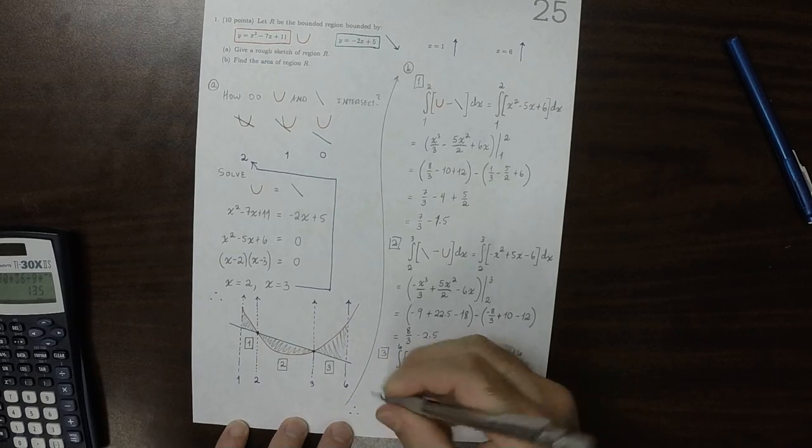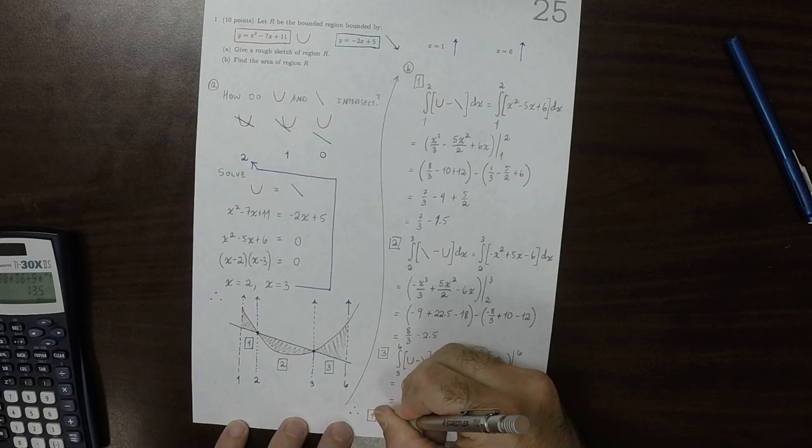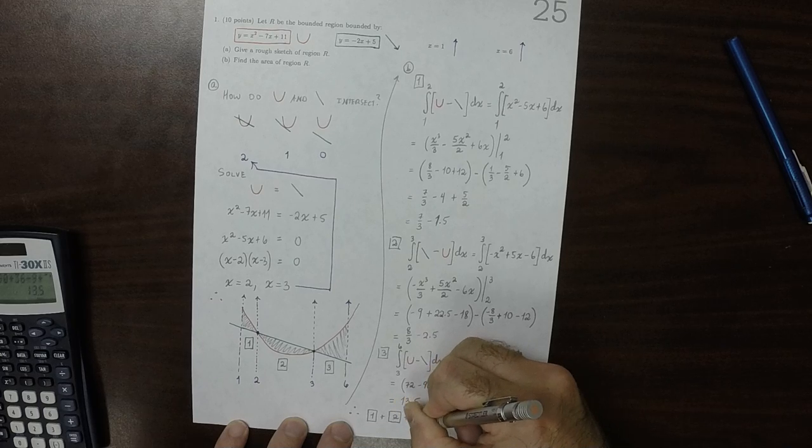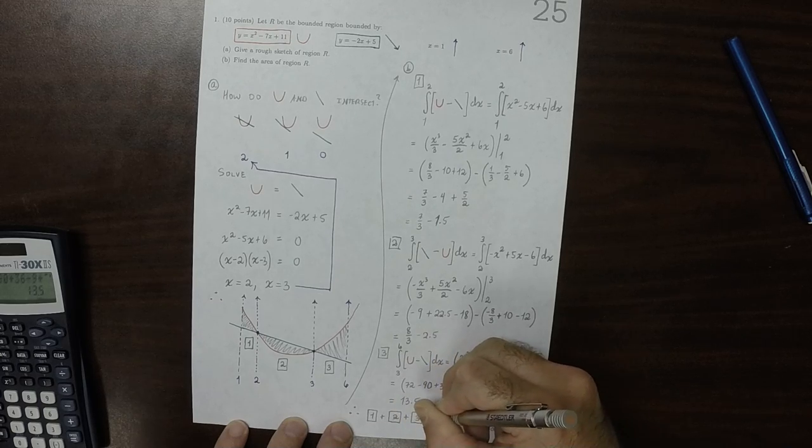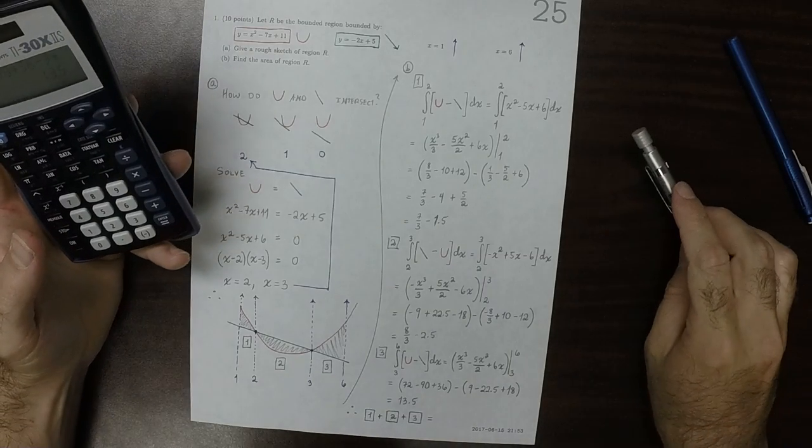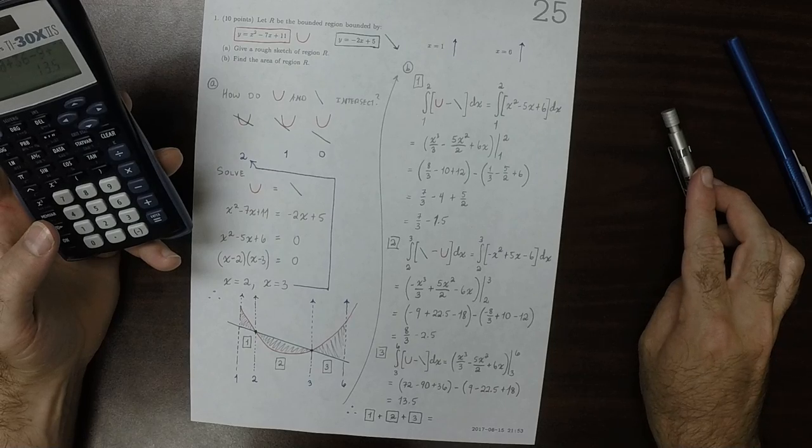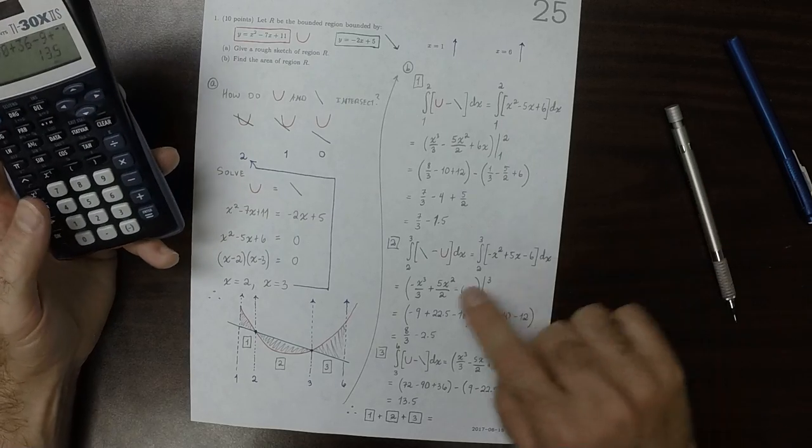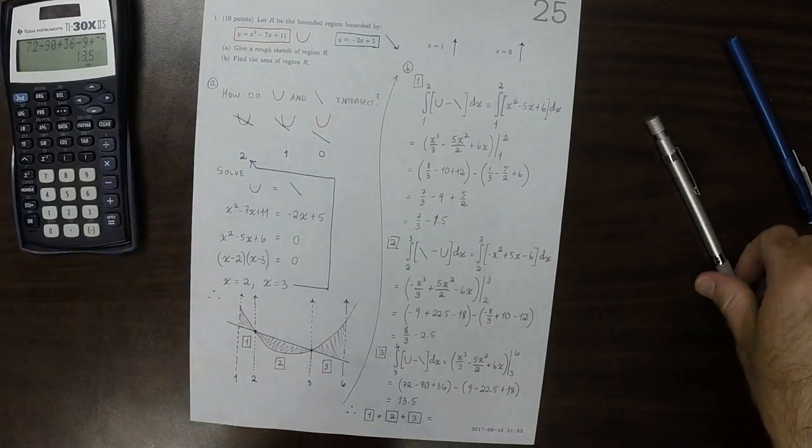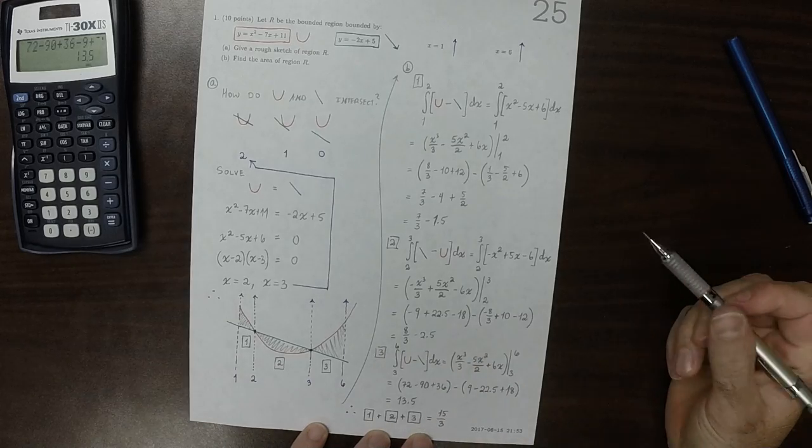therefore, 1 plus 2 plus 3, those three regions. Okay. So then if we add together the thirds, 7 thirds plus 8 thirds, that's 15 thirds, which is nice. So 15 thirds, and then if we add together the rest,